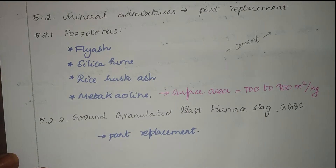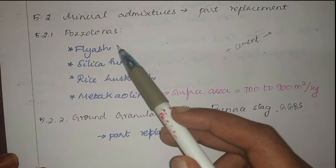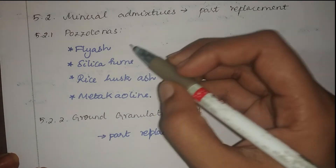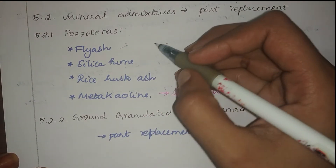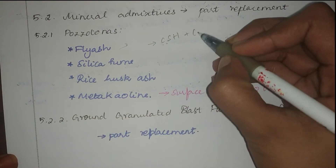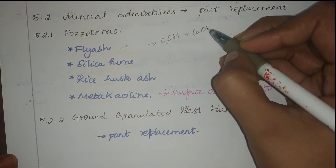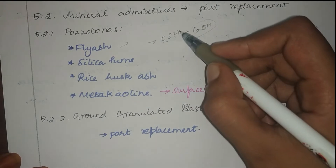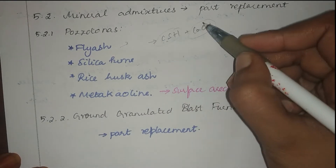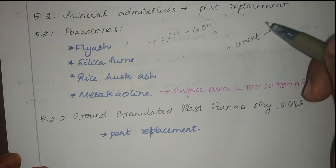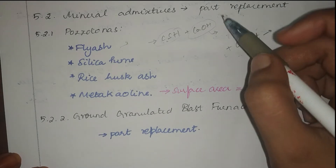As we can see, all these types are actually waste materials from industries, so they give us environmental advantages. In the hydration reaction we get a C-S-H gel and calcium hydroxide (CaOH). CaOH is not beneficial to us — only C-S-H produces strength. Calcium hydroxide is the weakest part in concrete.